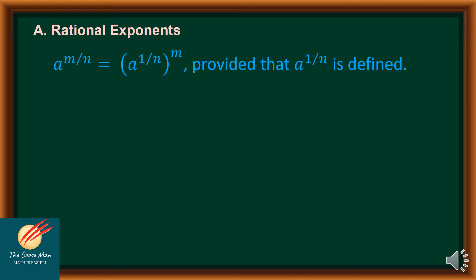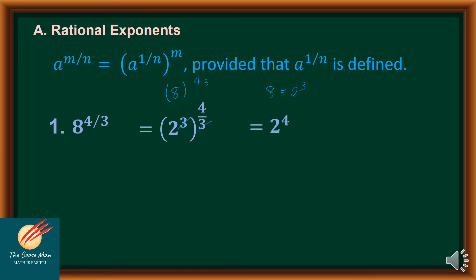Let's consider the expression a raised to m over n, which equals a raised to 1 over n, raised to m, provided that a raised to 1 over n is defined. For example, 8 raised to 4 over 3: note that 8 can be expressed as 2 to the 3rd power. So I have 2 to the 3rd power raised to 4 over 3. I can factor out 3, giving 2 raised to 4. And 2 raised to 4 equals 2 × 2 × 2 × 2, which equals 16.